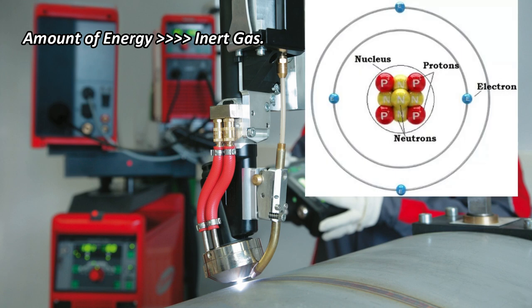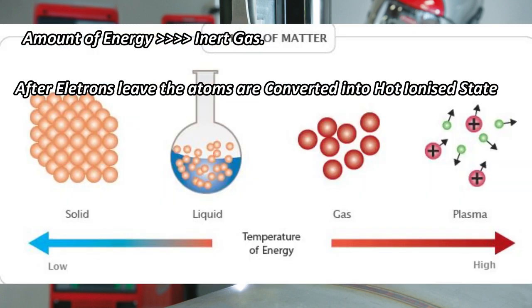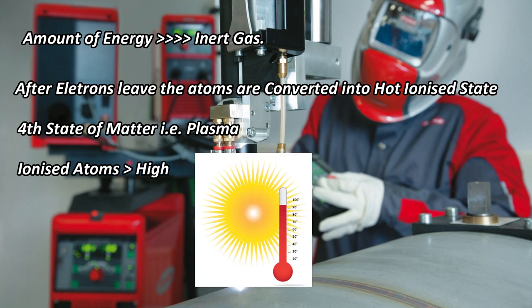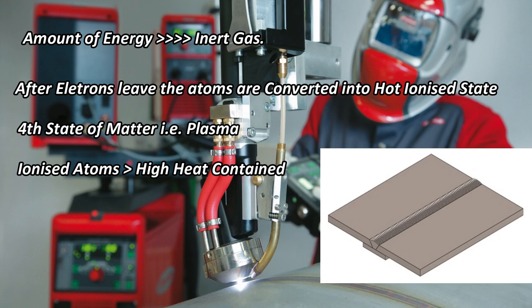When a sufficient amount of energy is provided to any inert gas, some of its electrons break free from the nucleus but travel with it. After the electrons leave, the atoms are converted into a hot ionized state. It is the most common fourth state of matter. These ionized atoms have high heat content which is further used to join two plates. This is the basic principle of plasma arc welding.